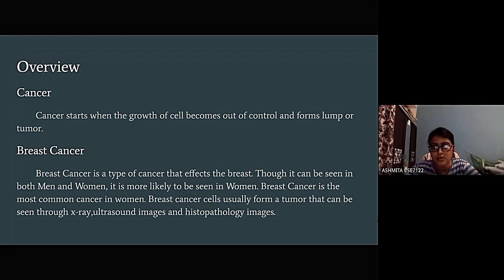There are various types of cancer. One of the major cancer is breast cancer and this is what our topic will be dealing with. Breast cancer is a type of cancer that affects the breast and this is mostly seen in men and women but it's more likely to occur in women. Breast cancer cells will form a tumor that can be seen through x-ray ultrasound images and histopathology images. And we will be dealing with histopathology images.